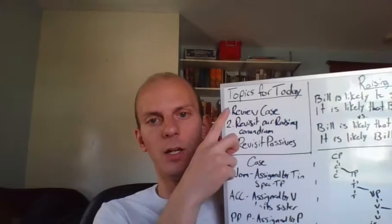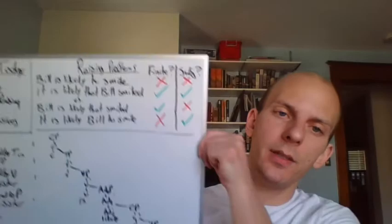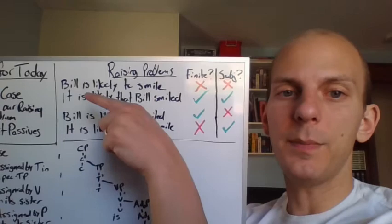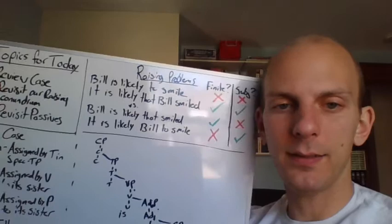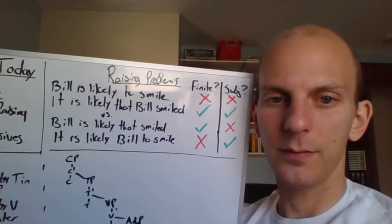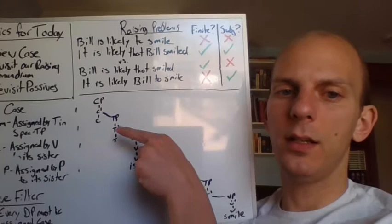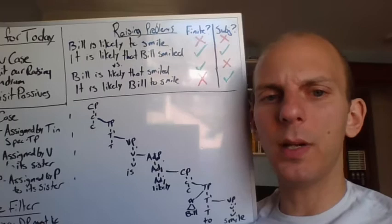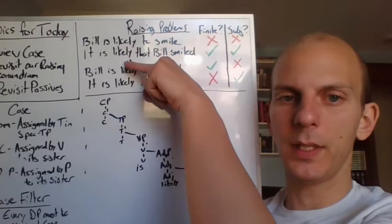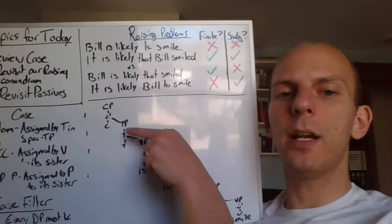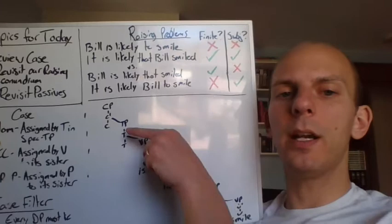So we have a review of case, very briefly, and now let's revisit our raising conundrum and finally get to the bottom of this. For our raising conundrum, we were looking at raising sentences like 'Bill is likely to smile' or 'it is likely that Bill smiled.' We were looking at these sentences, and we figured out a way to generate those through movement of the subject — essentially Bill moving from down here to up here. 'Bill is likely to smile' — that was satisfying the EPP, because this clause currently doesn't have a subject. The other sentence is 'it is likely that Bill smiled,' where we just add 'it' up here to satisfy the EPP. Two different strategies of satisfying the EPP.